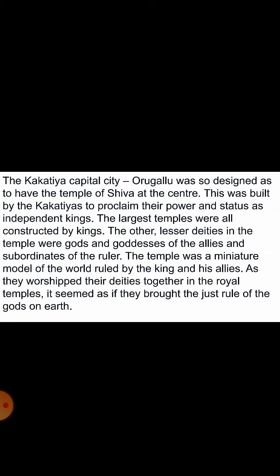The largest temples were all constructed by kings. The other lesser deities in the temple were gods and goddesses representing the allies and subordinates of rulers. The temple was a miniature model of the world ruled by the king and his allies. As they worshipped their deities together in the royal temples, it seemed as if they brought the just rule of the gods on earth.